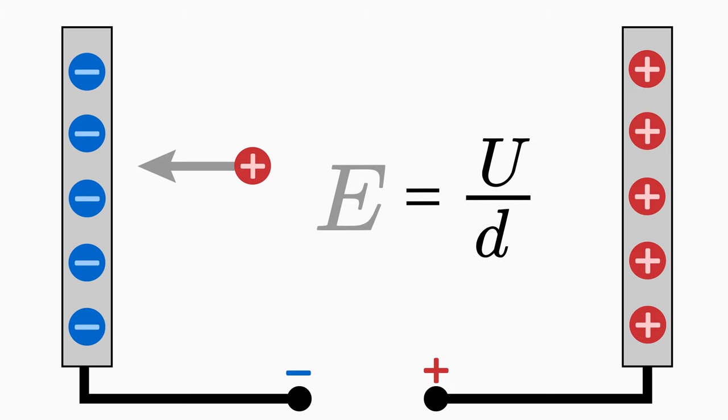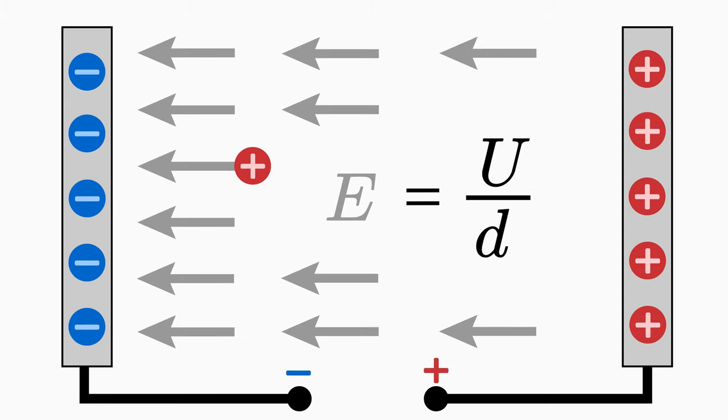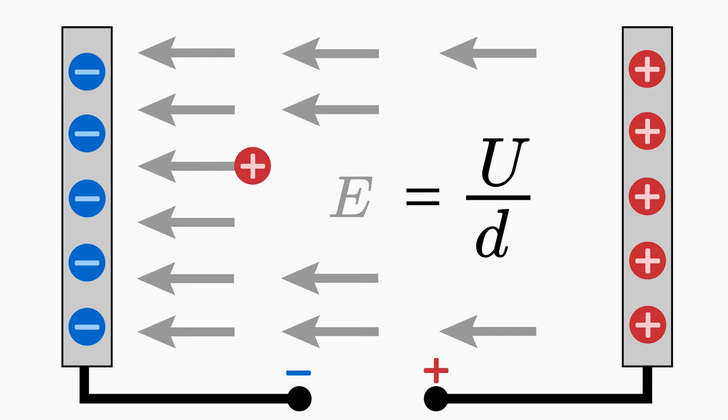The electric field E in the plate capacitor is also homogeneous. Instead of drawing the vector arrows, the electric field is often illustrated with field lines. On such a straight line, the test charge then moves.